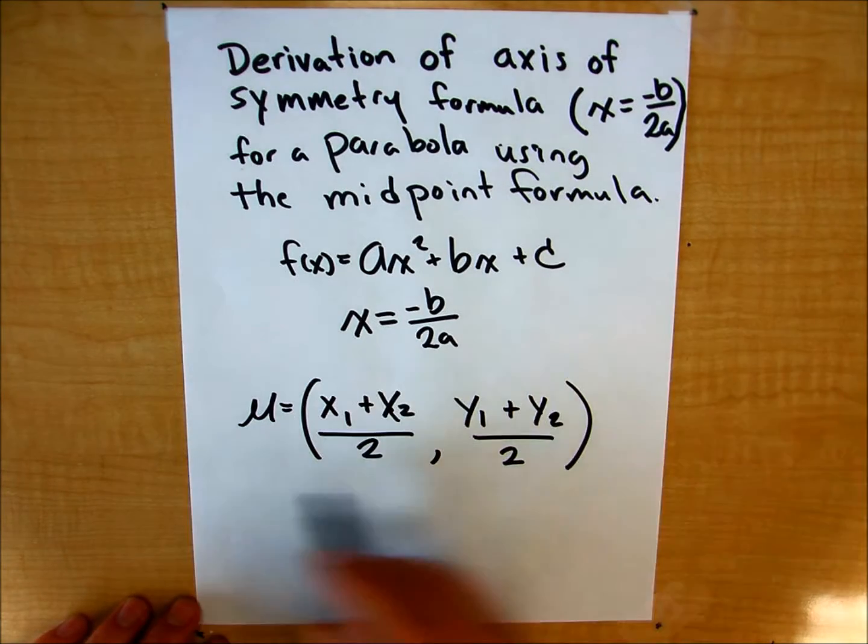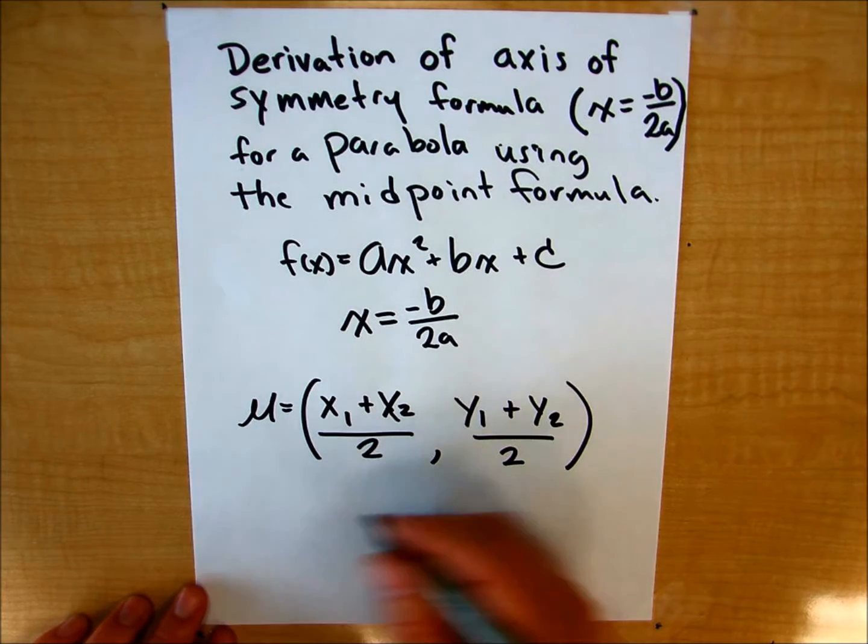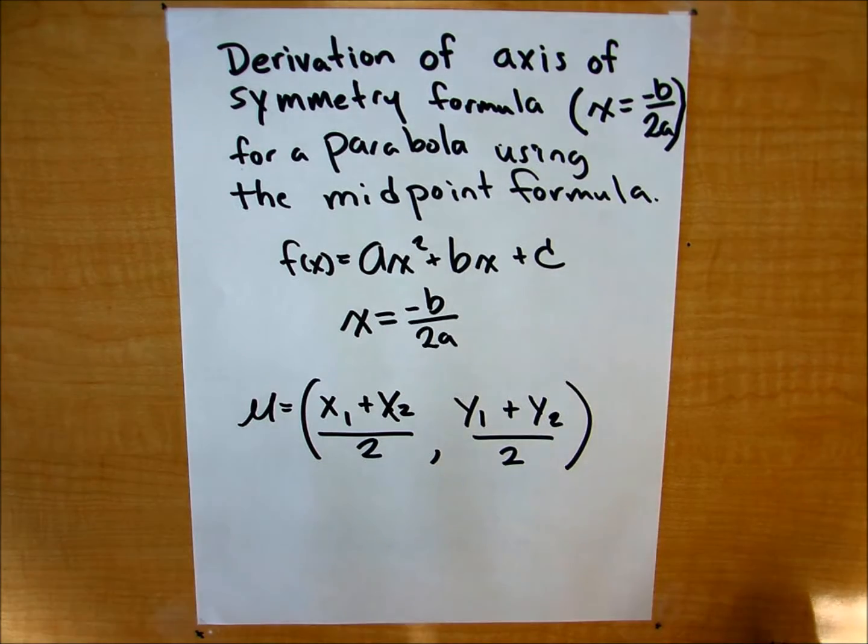So we're going to use this formula, and we're going to try to come up with this negative b over 2a.